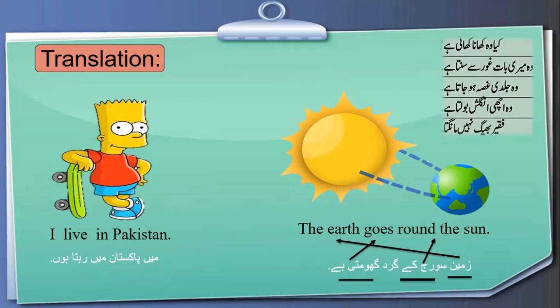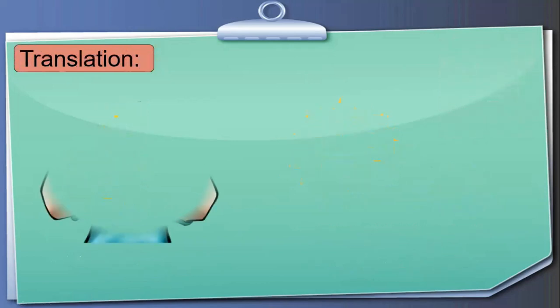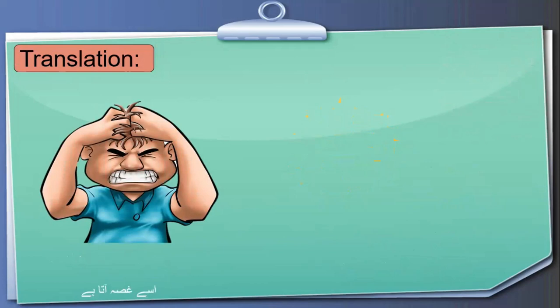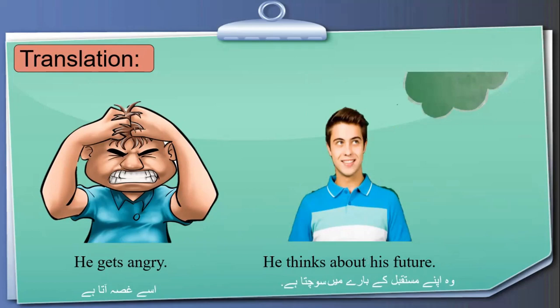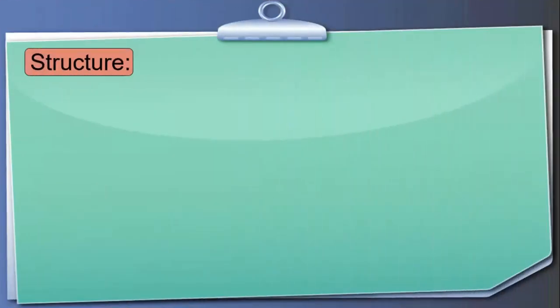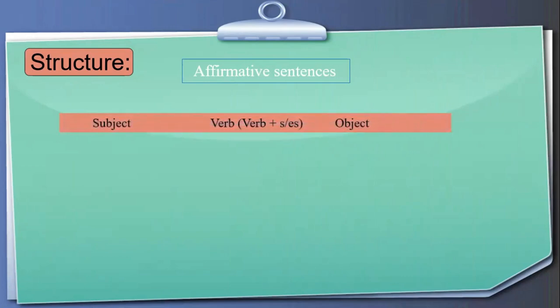Let's look at some translations again. 'Usse gussa ata hai' translates to 'He gets angry.' 'Woh apne mustaqbil ke baare mein sochta hai' translates to 'He thinks about his future.' These are examples of translating from Urdu into English. Now we are going to learn the sentence structure in present simple tense, starting with affirmative sentences.